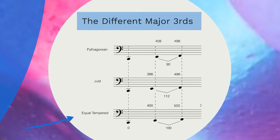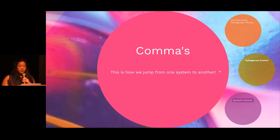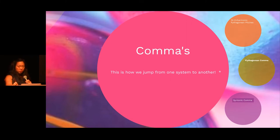The distance between the major third and perfect fourth is quite large. In Pythagorean, it's a 90-cent semitone. In just, it's quite large — a 112-cent semitone. Whereas in equal temperament, it's the standard 100-cent semitone. This leads us to commas. This is how string players can jump from one system to another. With an understanding of the cent variations between the three intonation systems, it is possible to learn how to seamlessly implement and interchange from one intonation system to the next, if you know how to use the commas.